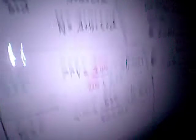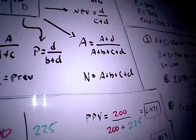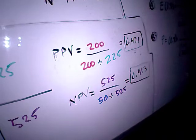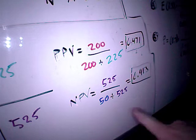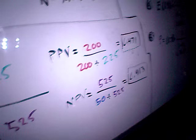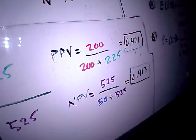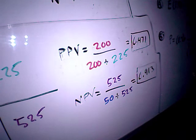Likewise, if I want to calculate my negative predictive value, negative predictive value equals D divided by C plus D. We know that D is 525, and we know that C is 50, so 525 divided by 50 plus 525, and that gives us a negative predictive value of 0.913 or 91.3 percent.